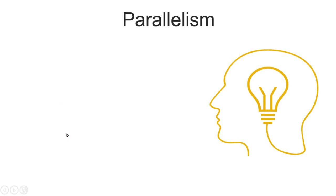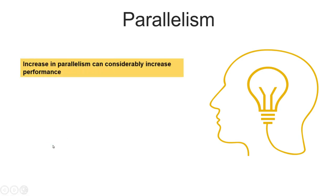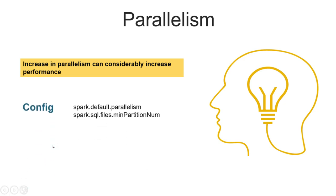Another important parameter is parallelism. If we can increase the parallelism in Spark, we will definitely have a good increase in performance. One way of doing that is by setting the parameter `spark.default.parallelism`, or we can set `spark.sql.files.minPartitions`. This means when Spark tries to read a folder with multiple files, if the minimum partition number is set to, say, 10 and Spark finds more files, it can spawn another job in parallel to process the rest. These two parameters can come in handy to increase parallelism.